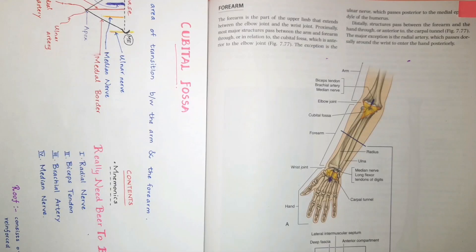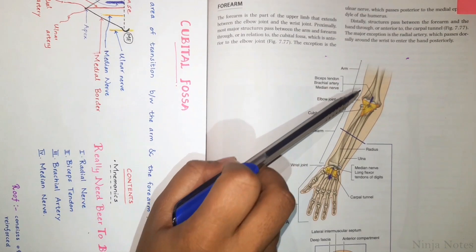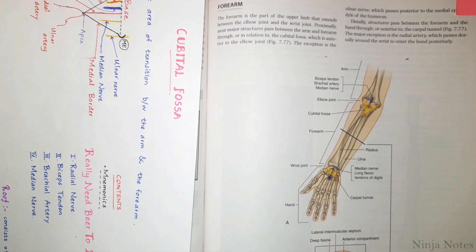Welcome to Ninja Note. Today we are going to talk about the cubital fossa, which is an important area of transition between the arm and the forearm. It is located anterior to the elbow joint and it is a triangular depression formed between the forearm muscles.